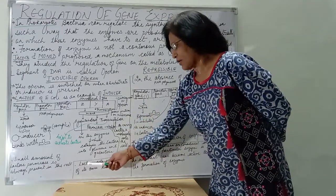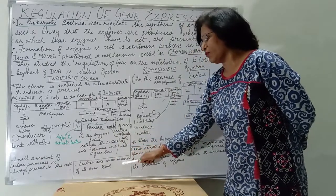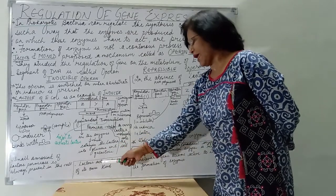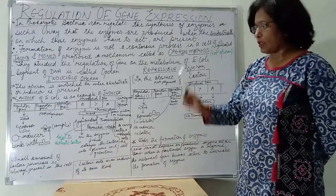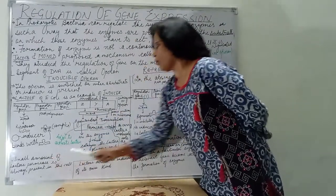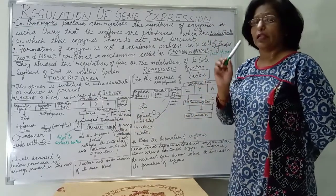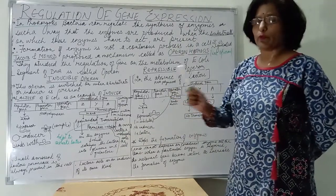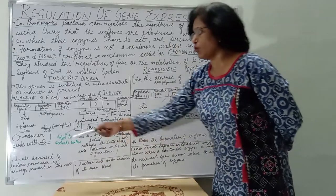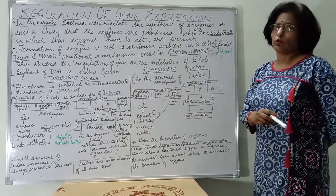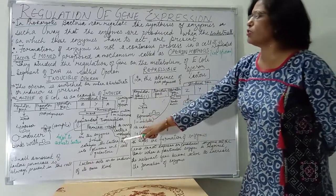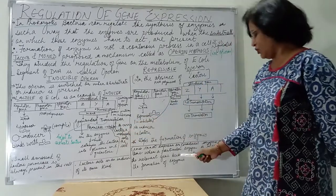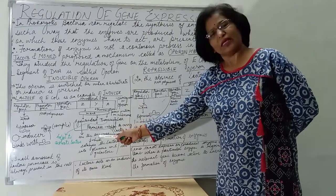Lactose acts as an inducer of its own kind — as the lactose is converted into glucose, lactose itself acts as the inducer. An important point is that a small amount of lactose permease is always present in the cell, and this initiates the process because lactose permease helps to take the molecules of lactose into the cell.